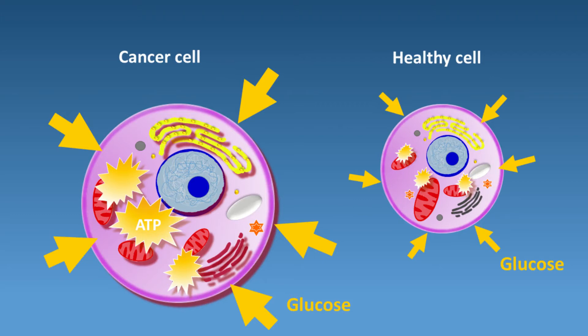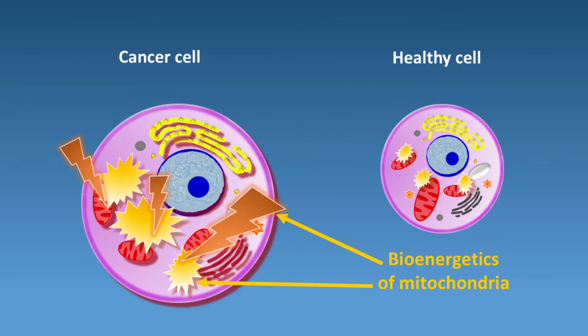To get that fuel, the cancer cells absorb far more glucose, shown here with the arrows, than a healthy cell. The mitochondria then converts glucose into ATP, which enables the cancer cell to grow bigger and to quickly make copies of itself. We call the huge need for lots of energy in the cancer cell the bioenergetics of the mitochondria.